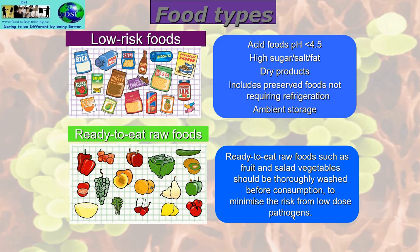Ready to eat raw foods, such as salads and fruit, should be thoroughly washed before consumption to minimize risk from low dose pathogens. Normally with food poisoning bacteria you need several hundred thousand or even a million to make you ill — you can fit a million salmonella on a pinhead. But with ready to eat raw foods grown in soil or handled by people, even one or two bacteria can cause a problem.